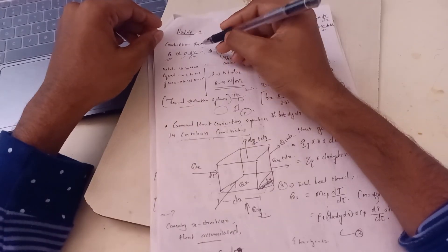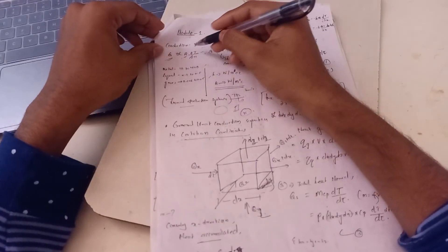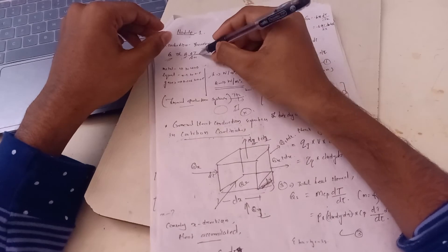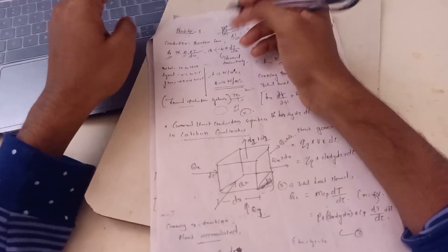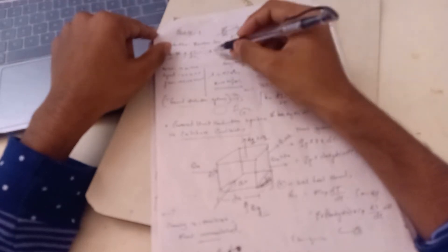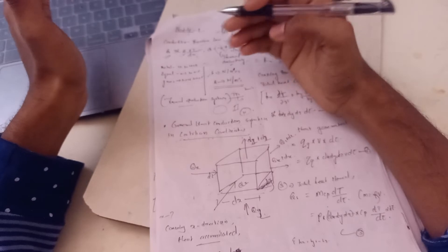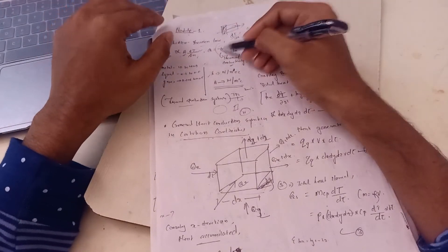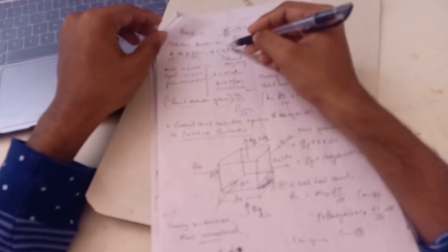Heat transfer Q is directly proportional to area A and the temperature gradient dT/dx. That is, Q is directly proportional to the area of cross-section perpendicular to the direction of heat flow and the temperature gradient dT/dx. We introduce a constant k, the thermal conductivity. So the basic equation of conduction is Q equals minus kA dT/dx. The minus sign is because heat flows from high temperature to low temperature.